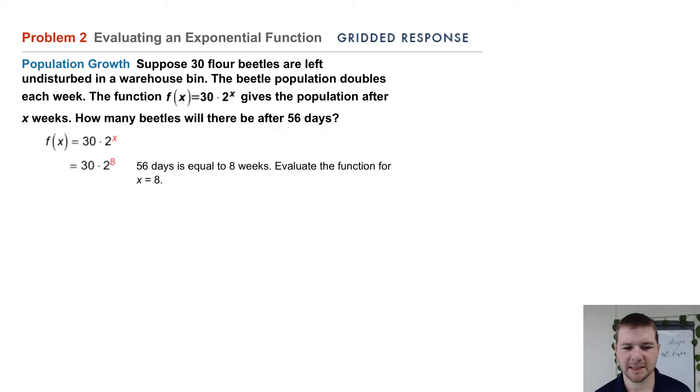We know 56 days is equal to 8 weeks, so we'll substitute x = 8 into our function: 30 × 2^8.